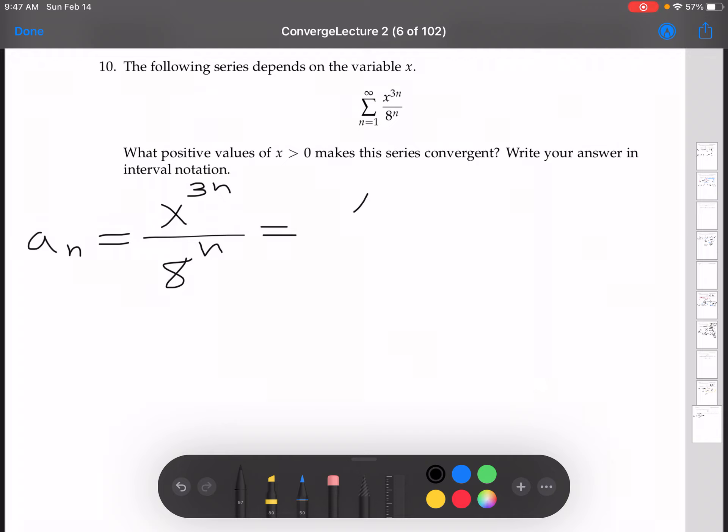something to the 3n. This is equal to x over something to the 3n. Then whatever this is, this will be our r. We'll be able to use the fact that geometric series converge when r is between negative 1 and 1.